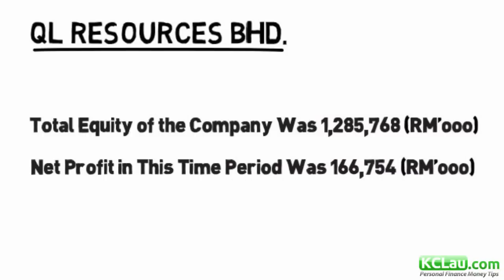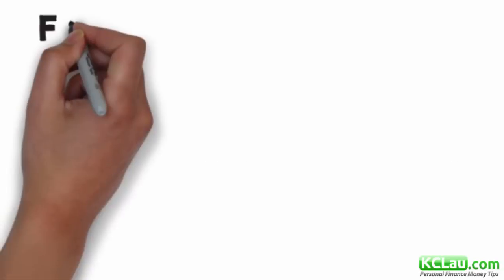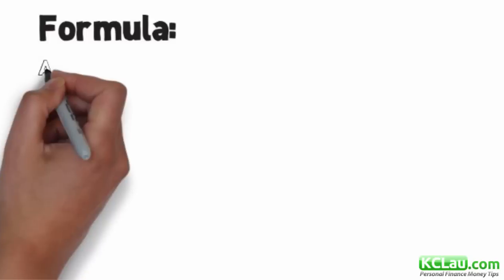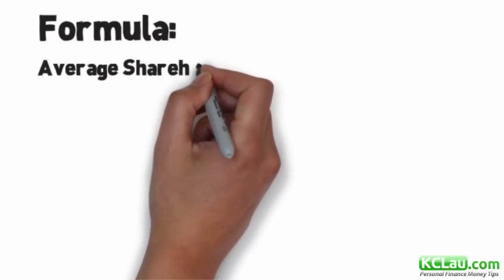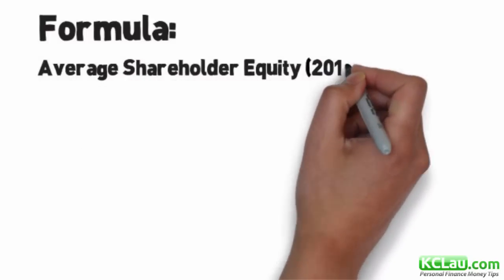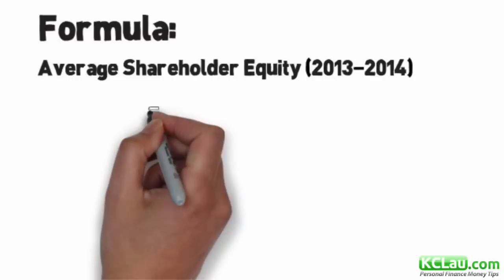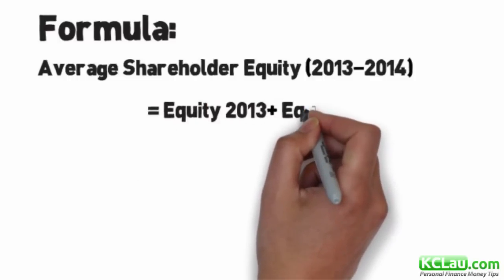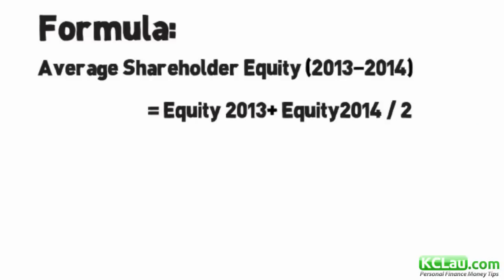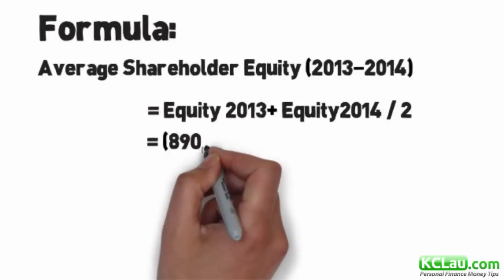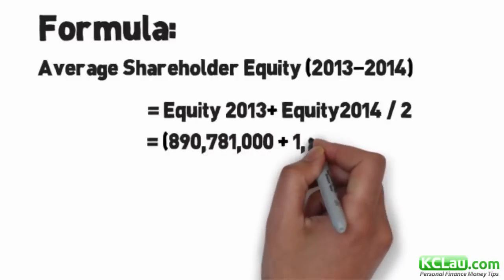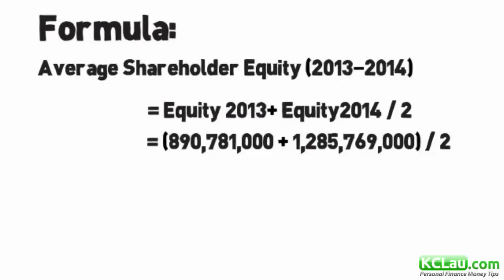It is easy to find out the net profit, but for the average shareholder equity in that period, it will be a little bit trickier. You will need to find the average shareholder equity using this formula, which is both the equity of 2013 and also equity of 2014. You have to add it up together and divide it by 2. So according to their financial report, it was 890 million for 2013 plus 1.3 billion in 2014, divided by 2.